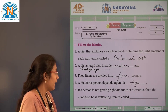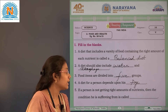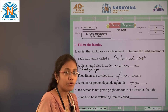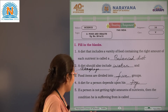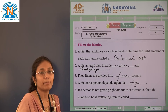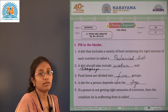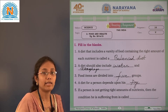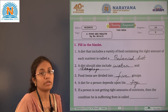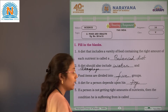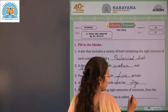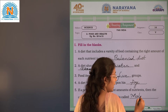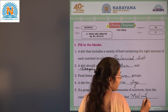Now see the fifth blank: if a person is not getting the right amount of nutrients, then the condition he is suffering from is called malnutrition.